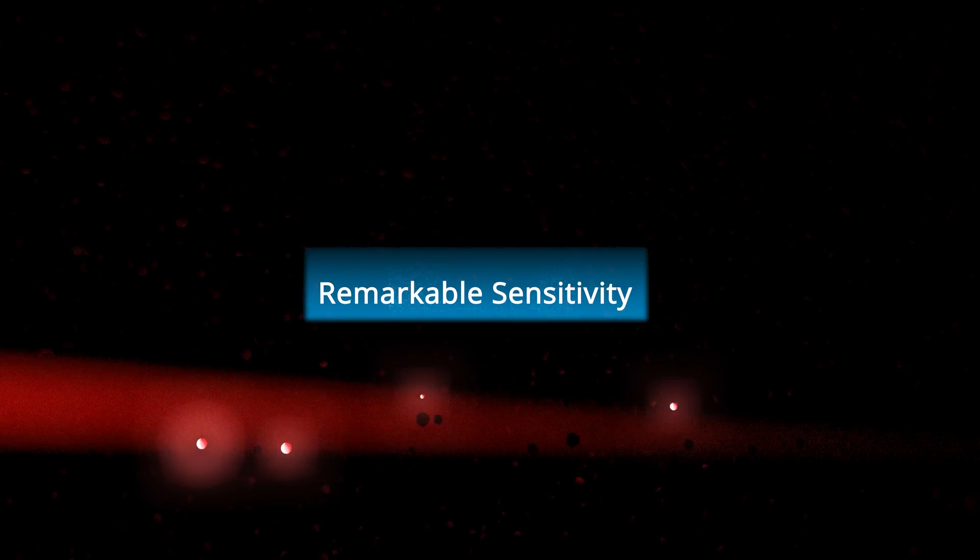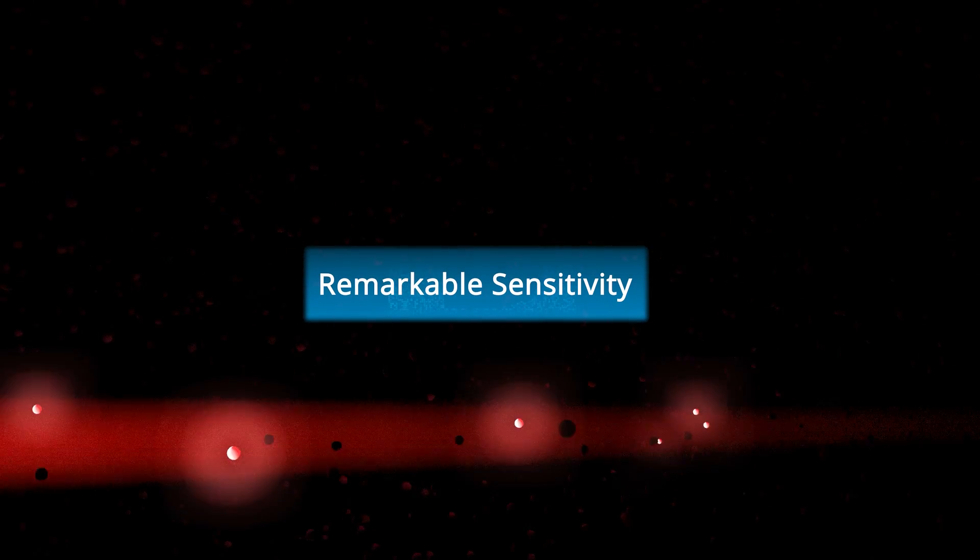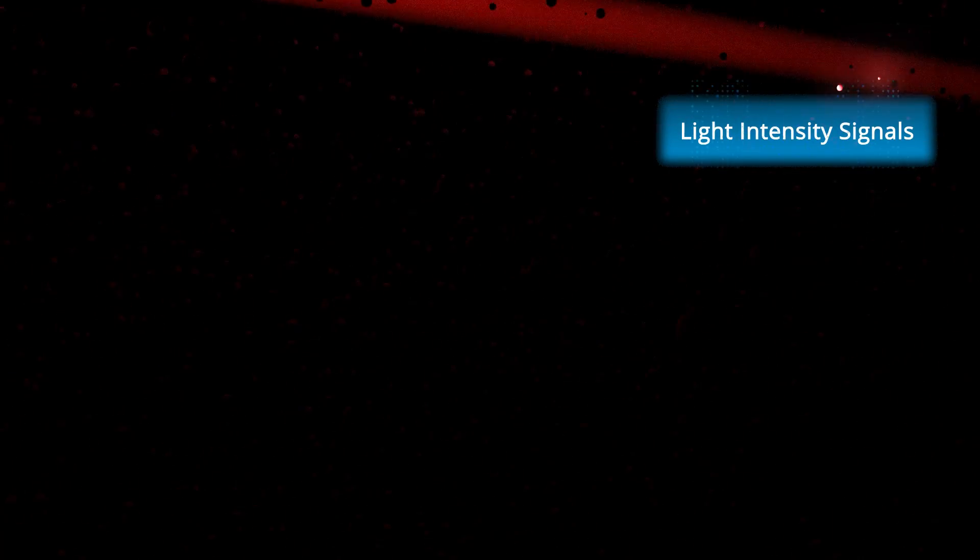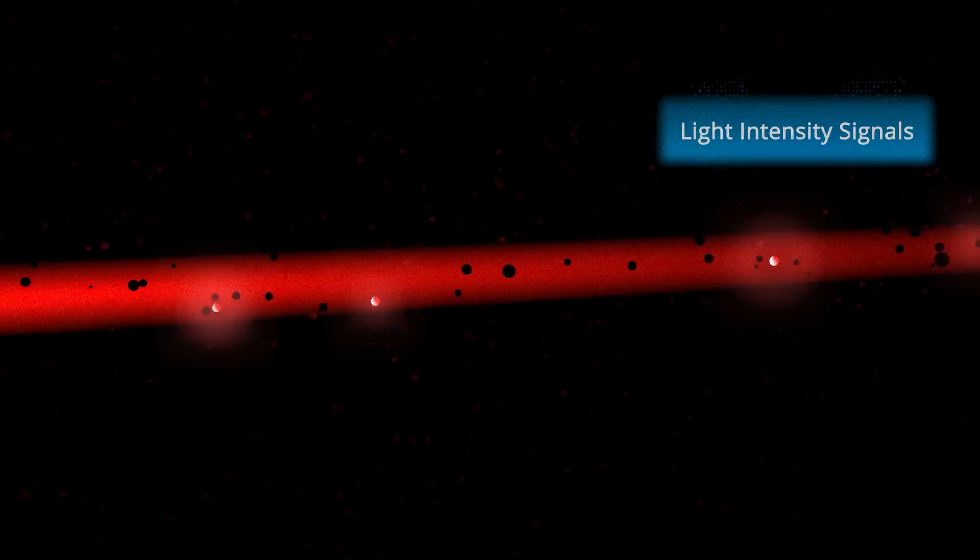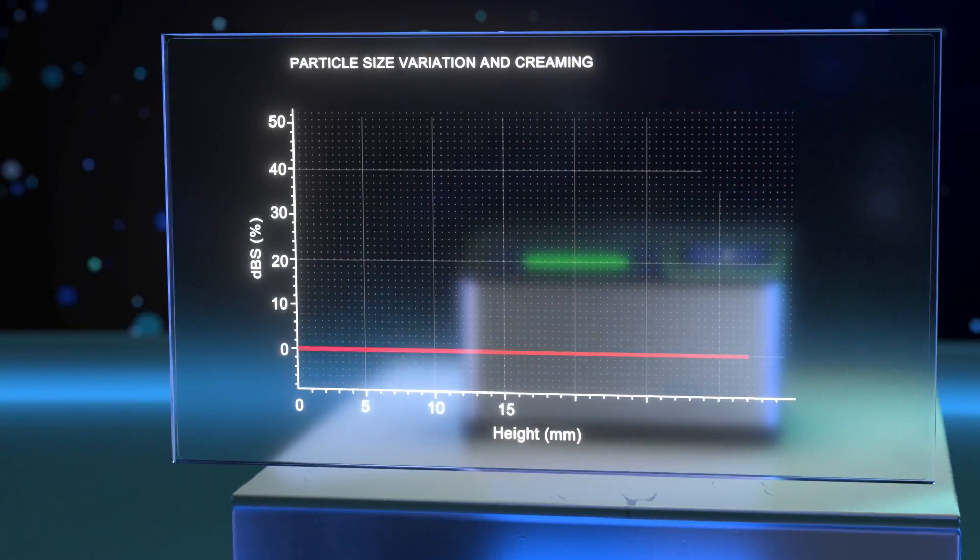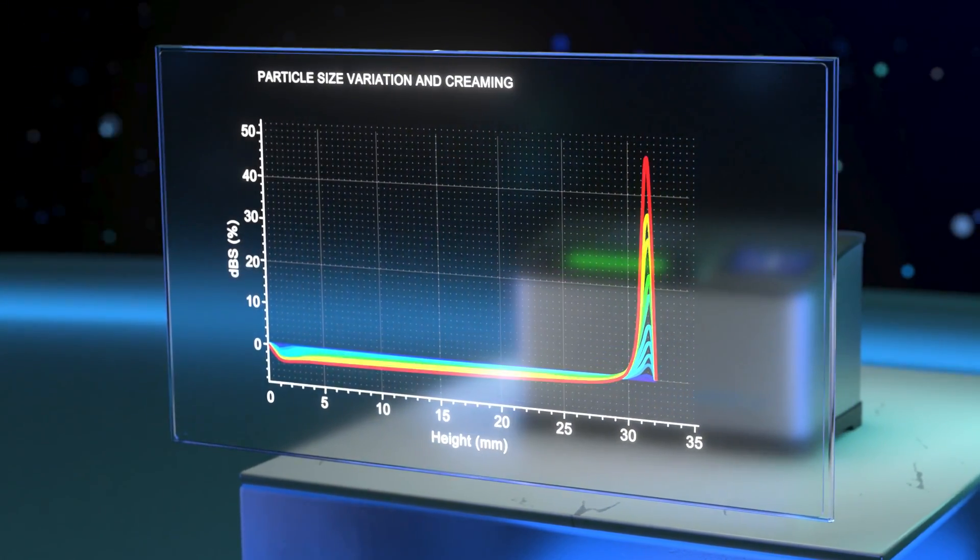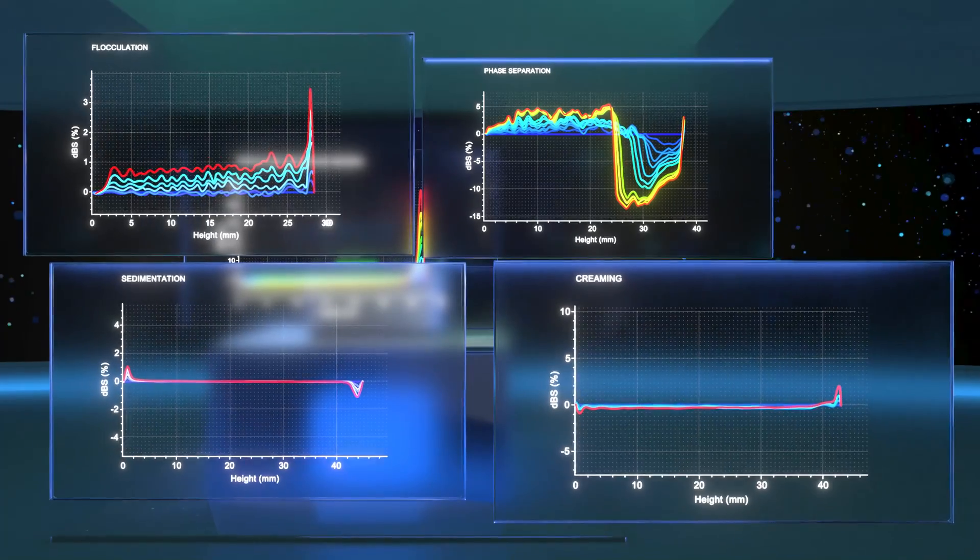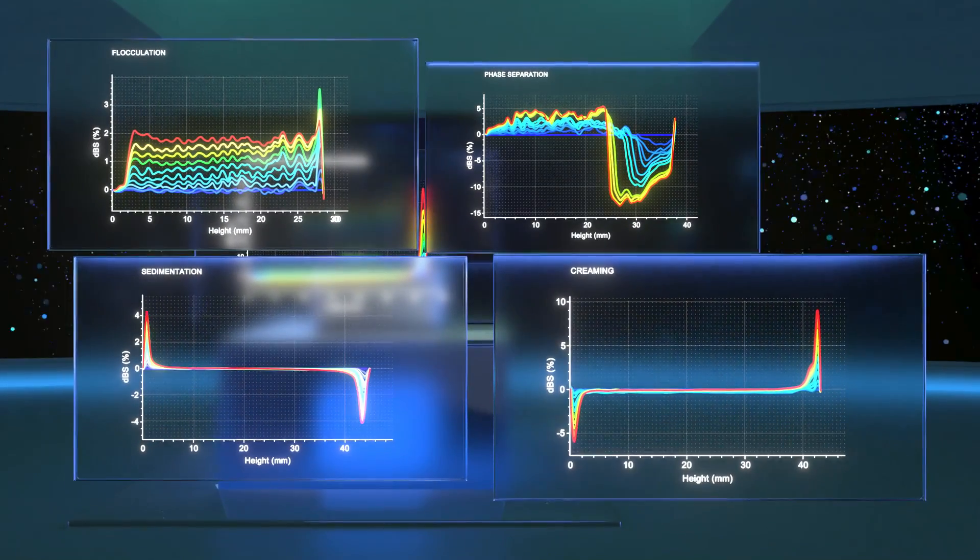What sets Bscan Lab apart is its remarkable sensitivity. By capturing light intensity signals every 20 microns along the sample height, it detects subtle variations in particle size and concentration, identifying various unstable phenomena 200 times faster than visual observation.